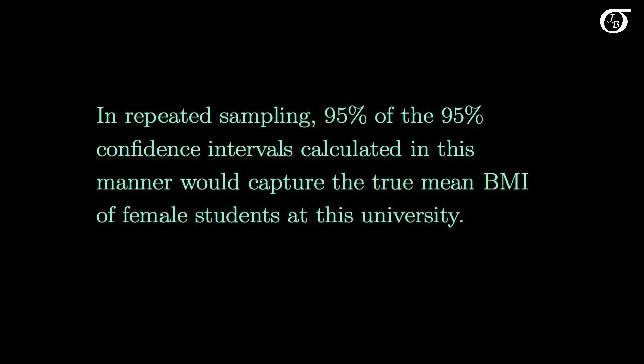We could also say that in repeated sampling, 95% of the 95% confidence intervals calculated in this manner would capture the true mean body mass index of female students at this university. And since we have one of those intervals, we can be 95% confident that our interval captures mu.